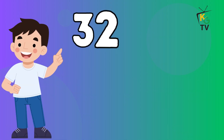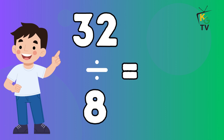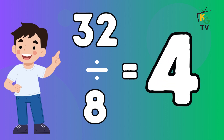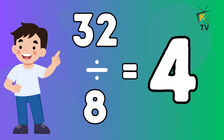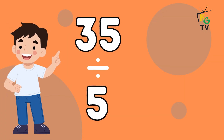32 divided by 8 is equal to 4. 35 divided by 5 is equal to 7.